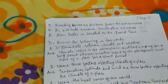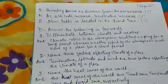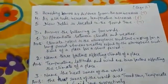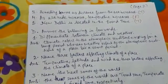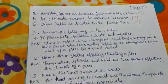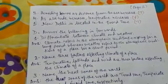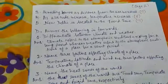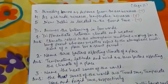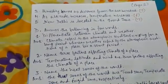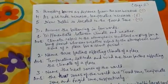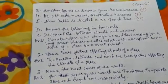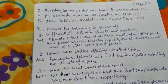Now let's see question D: Answer the following in few words. Question 1: Differentiate between climate and weather. The answer is: Climate refers to the atmospheric conditions existing for a long period, whereas weather refers to the atmospheric conditions of a place for a short period. Question 2: Name three factors affecting climate of a place. The answer is: Temperature, latitude, and wind.